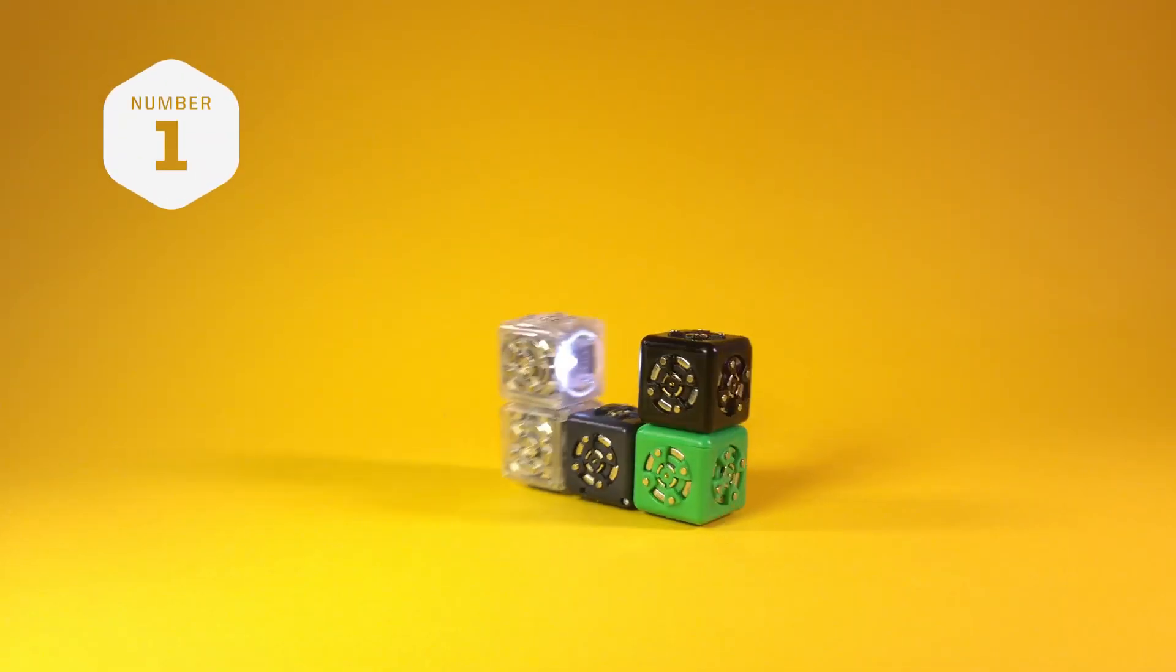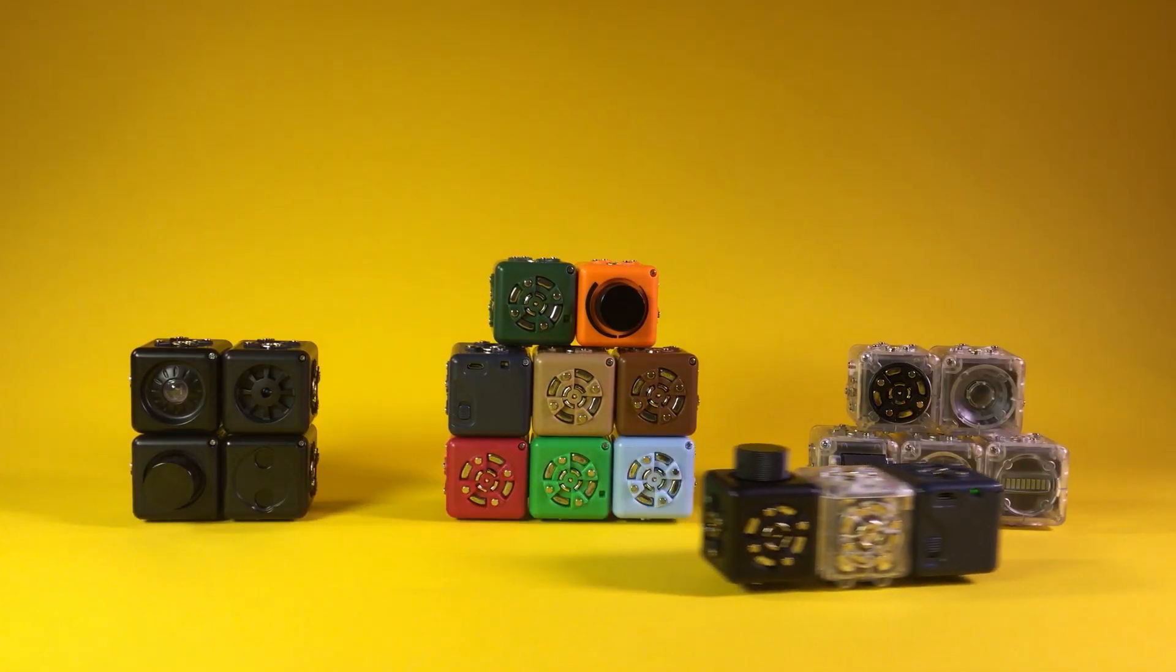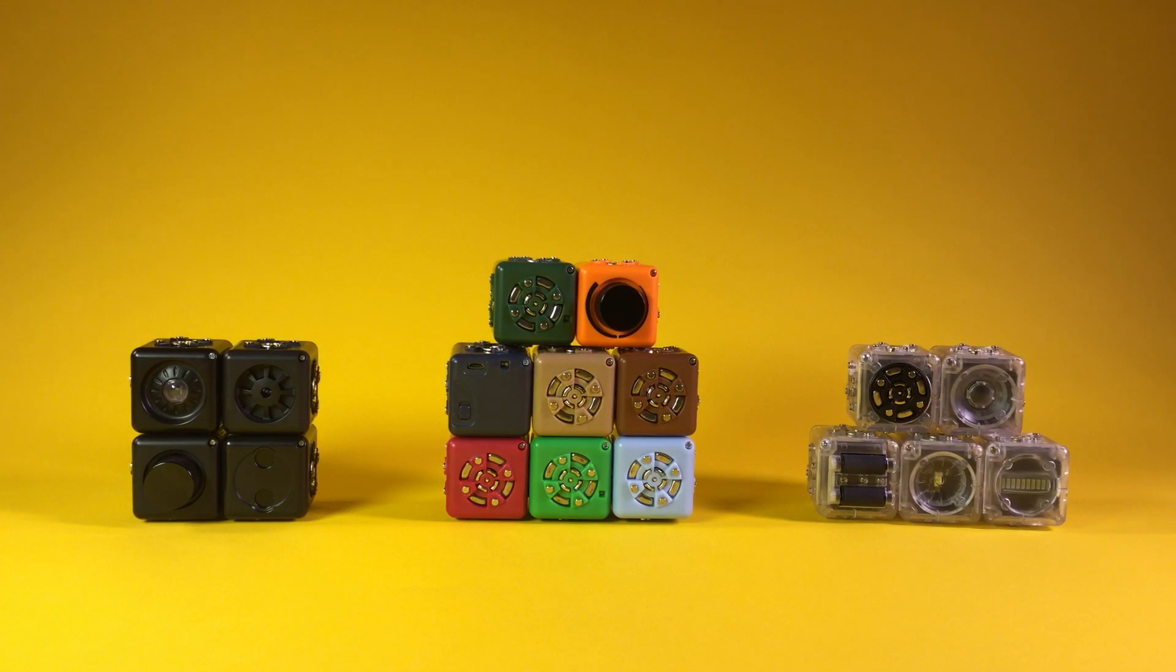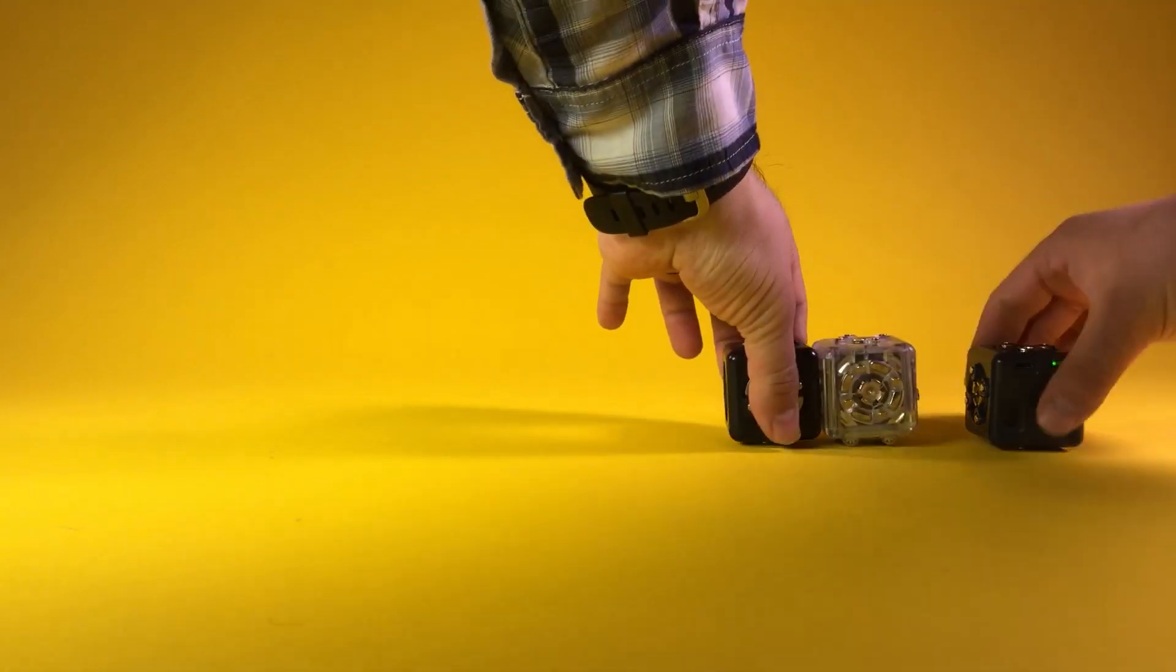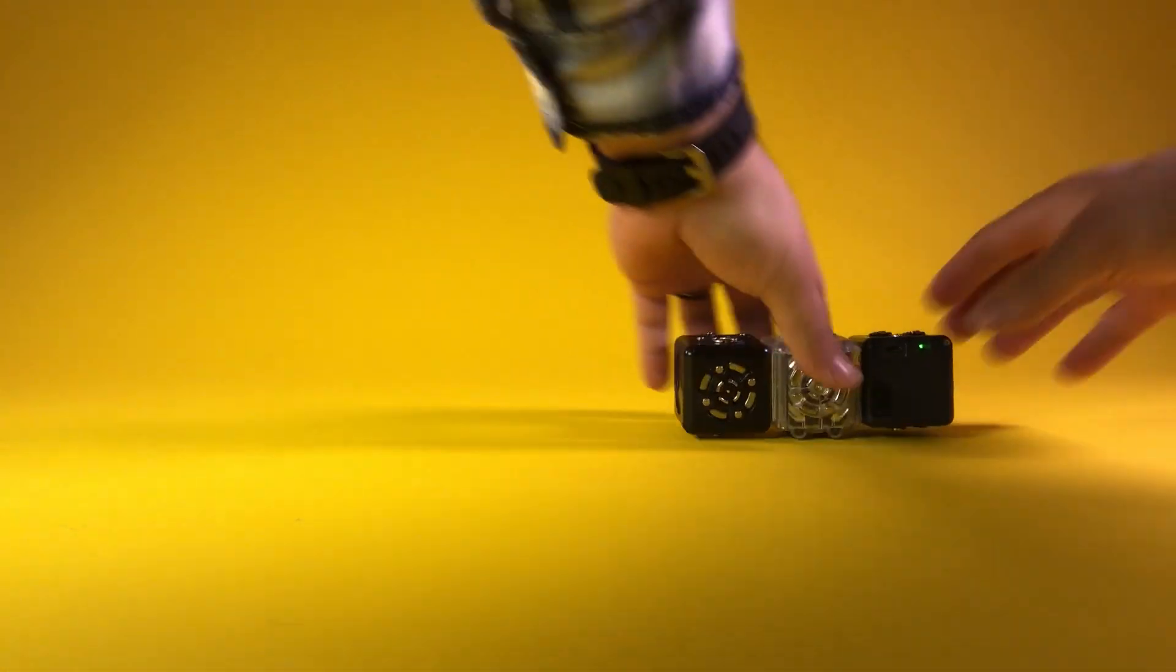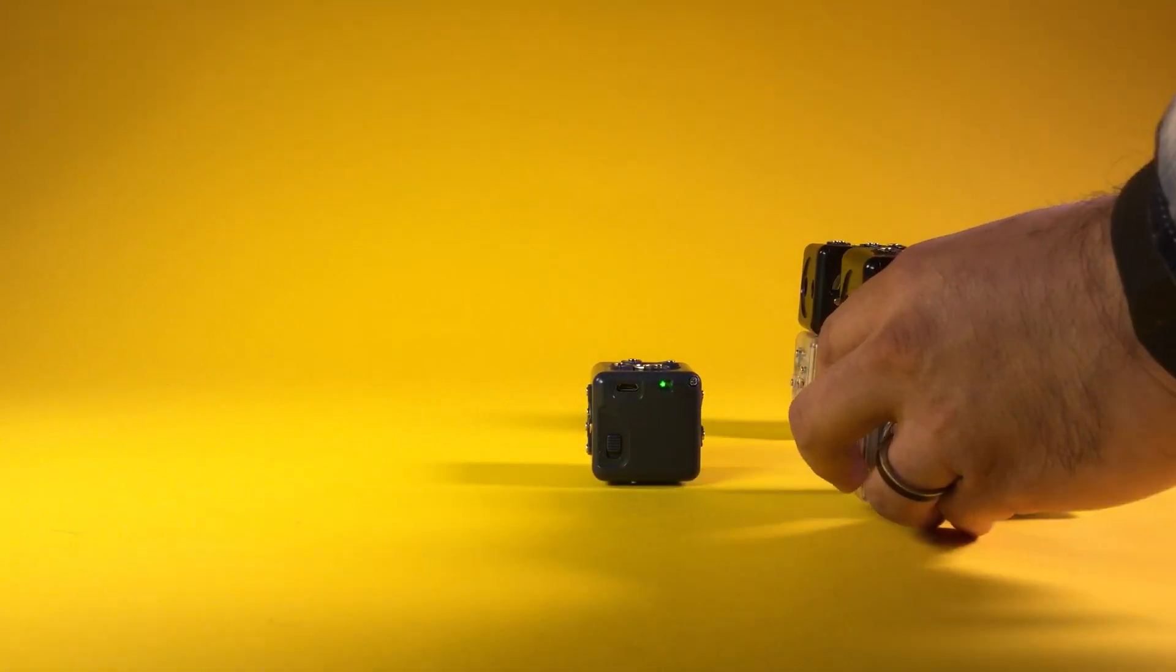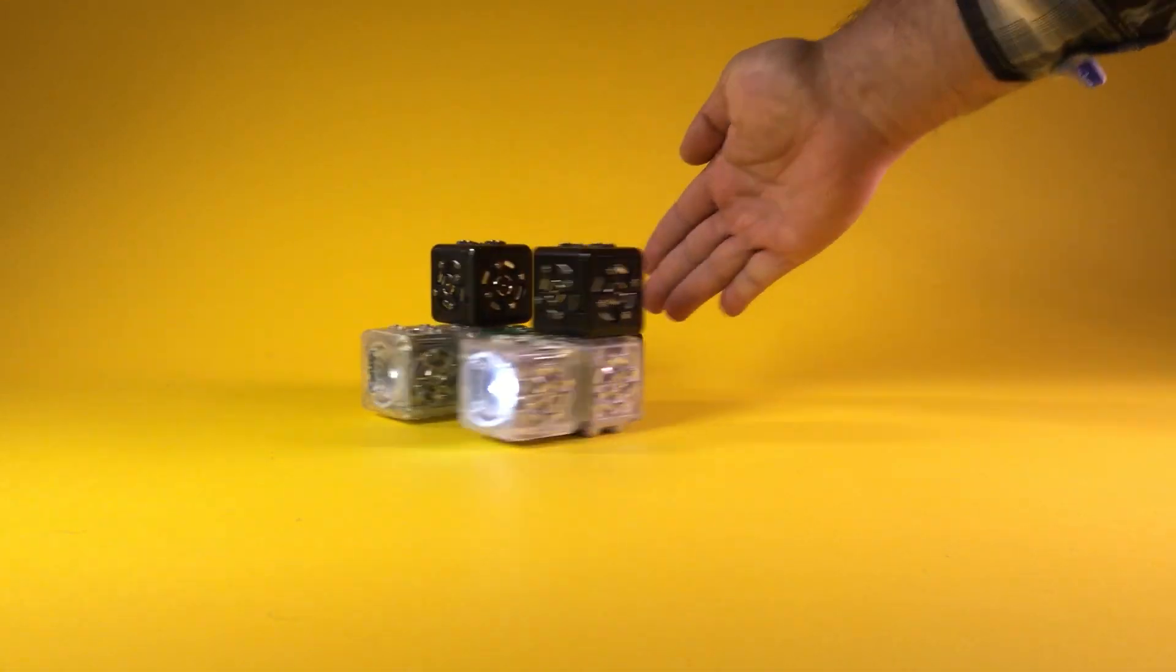Number 1. You can build robots with cubelets by combining the three types of cubelets, which we will call sense, think and act cubelets. Changing which cubelets we connect and how we arrange them determines what type of robot we've built. Add more cubelets to build bigger robots with more complex behaviors.